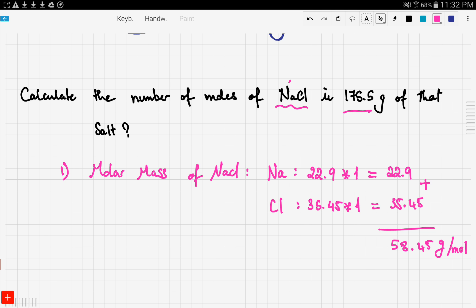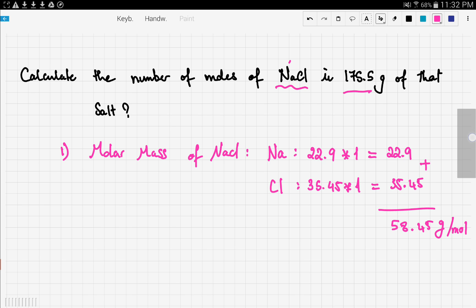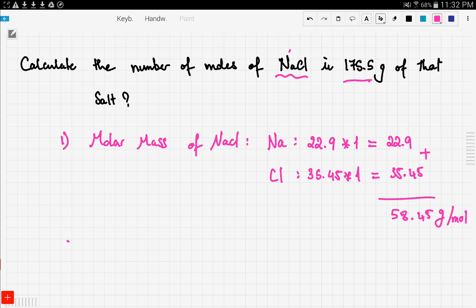Now the next step we're gonna do is use this relation and this relation is gonna become your best friend. Now the number of moles which we denote by n is equal to the mass, which is small m, over the molar mass which is big M.